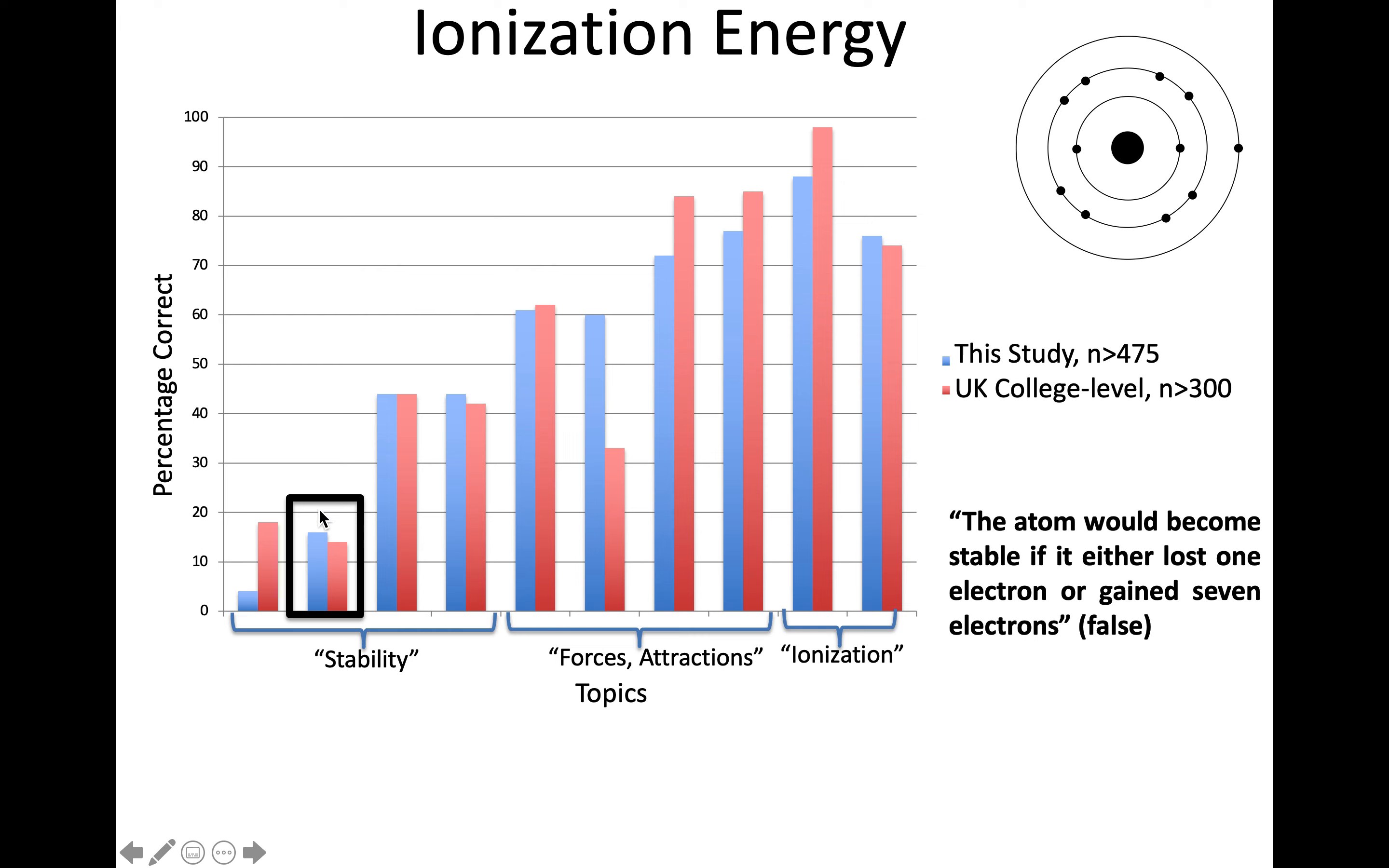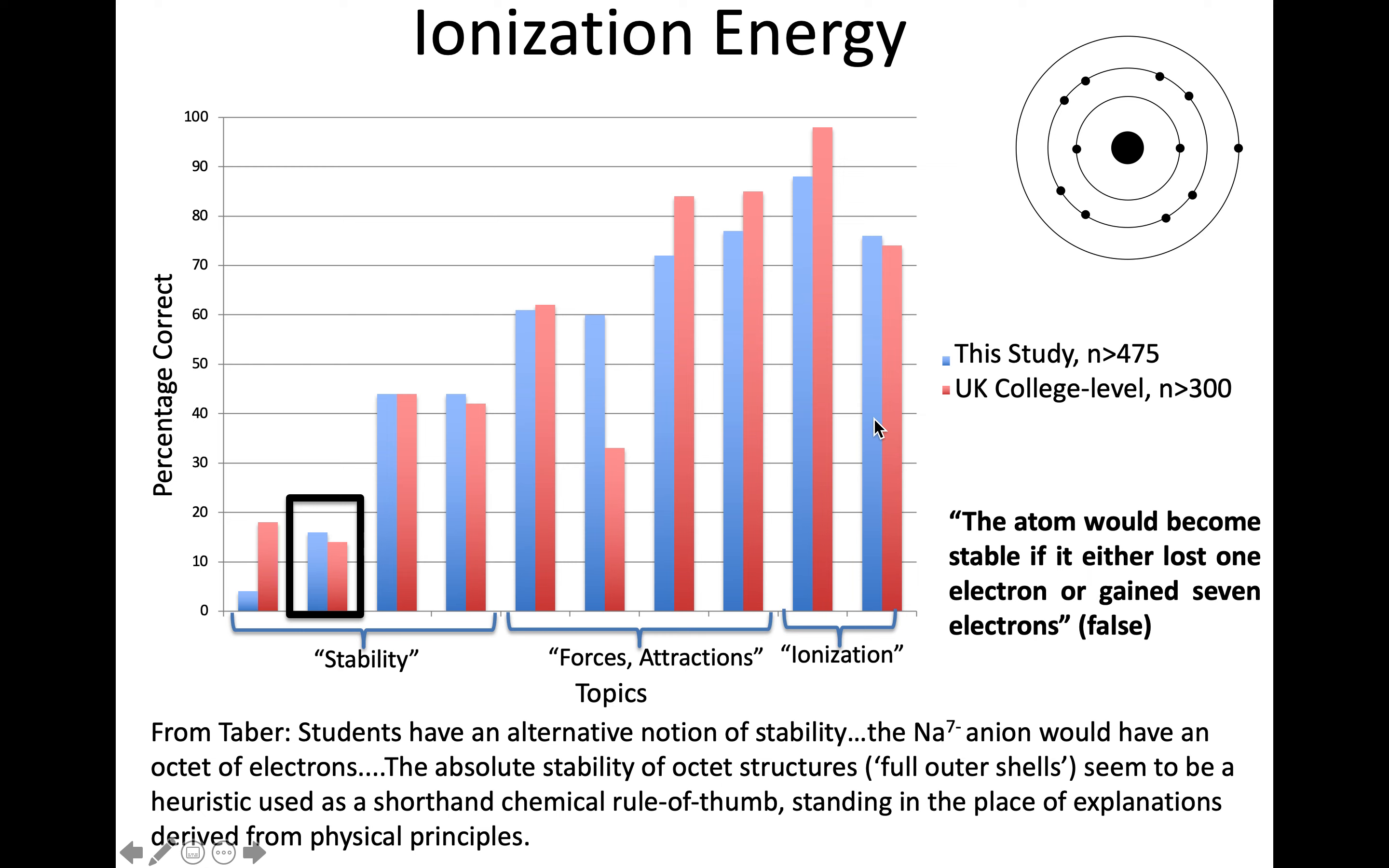What scored quite low in both my study and his? A statement like this: 'The atom would become stable if it either lost one electron or gained seven electrons.' That's false, but students find it compelling. Students have this alternate notion of stability—it's all about reaching octets. If sodium either removed one electron or added seven to reach that, it's about the stability of the outer shell. That's the shorthand students look for. It's baffling as a chemist—sodium as a seven-minus anion? What would that even mean in terms of stability? I can't think of any realm where I'd describe that as stable. But the majority of students look for this pattern of reaching an octet.